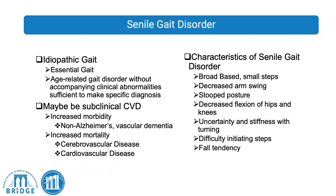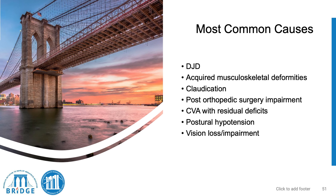Senile gait disorder is characterized by a broad-based gait with small steps, decreased arm swing, stooped posture, decreased flexion of the hips and knees, uncertainty and stiffness with turning, difficulty initiating steps, and a predisposition to falls.